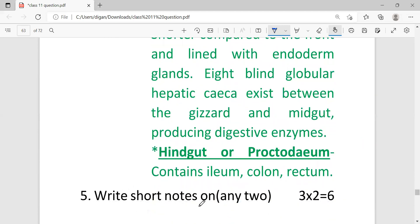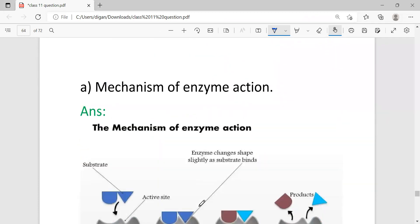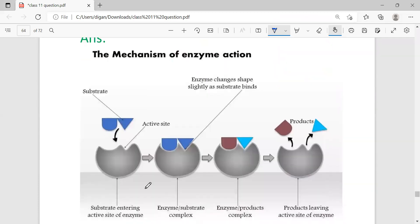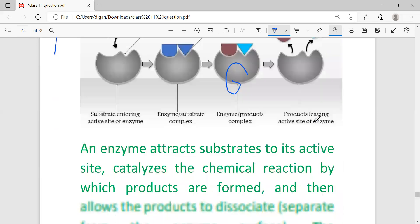Write short notes on any two, each carrying three marks. Mechanism of enzyme action. This is the diagram of mechanism of enzyme action: first, this is the substrate entering the active site of the enzyme. Then the substrate will make a site where the substrate will be attached with the enzyme and make an enzyme-substrate complex. Then the product will be formed - this is known as enzyme-product complex. And then from the enzyme, the product is released to perform different work.